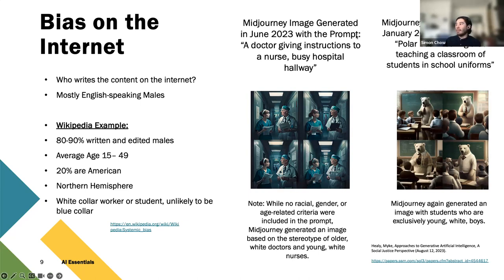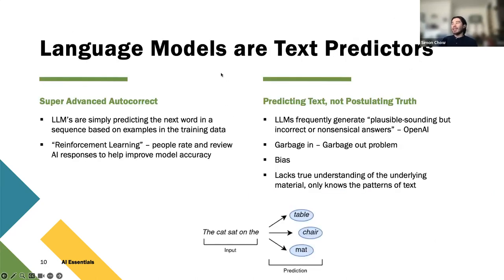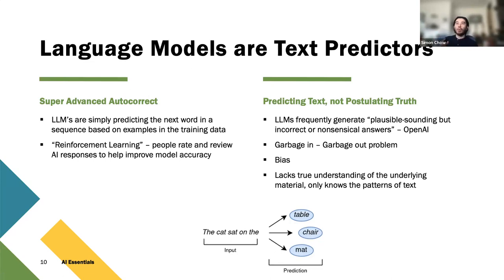For example, from a paper by Mike Healy: the image generator MidJourney was given the prompt 'a doctor giving instructions to a nurse, busy hospital hallway,' and it immediately assumed the doctor was an older white gentleman and the nurse a younger white female. In another example, 'a polar bear wearing a tie teaching a classroom of students in school uniforms' — MidJourney generated a classroom with no girls and no students of color. These models are ultimately just text predictors — the simplest way to think about ChatGPT is as a super advanced autocorrect.